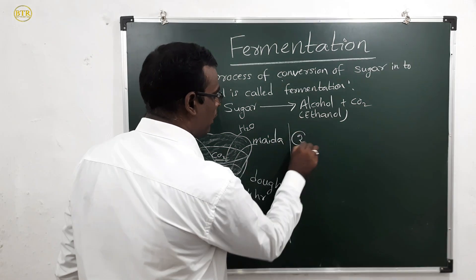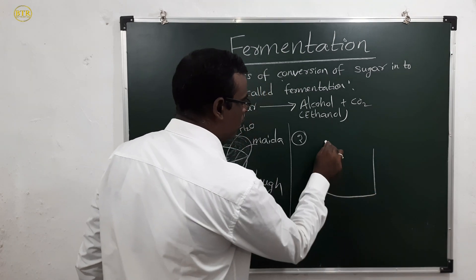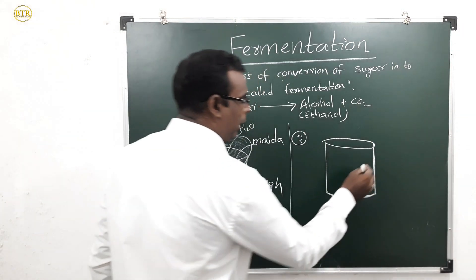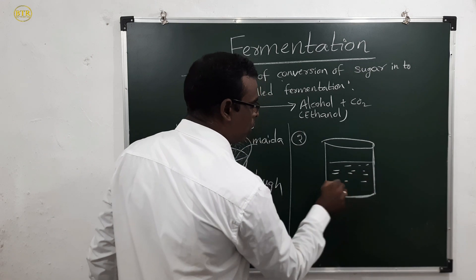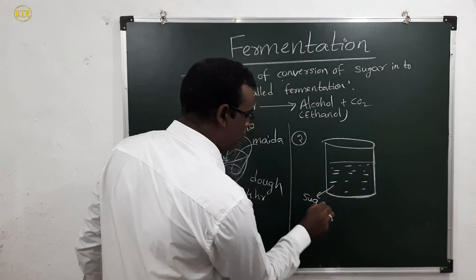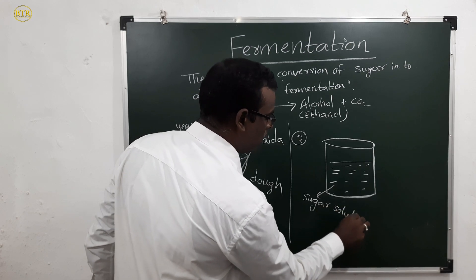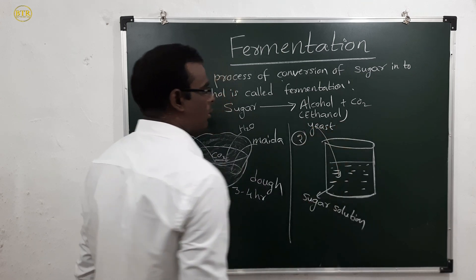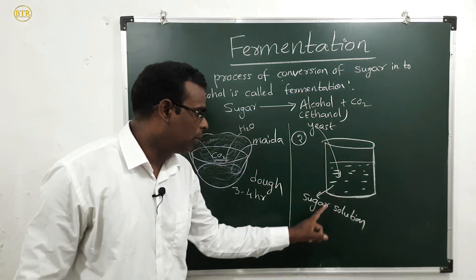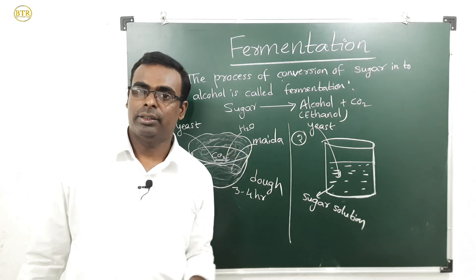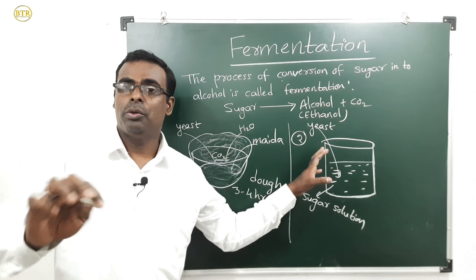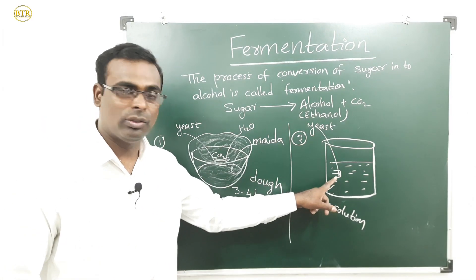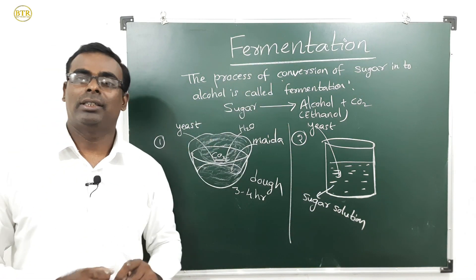Second example: take a beaker and add sugar solution. Add some yeast powder into the sugar solution. Now cut off the oxygen supply using some technique and let it sit for a few hours. The yeast in the sugar solution will then perform the fermentation process, or anaerobic respiration.